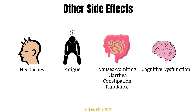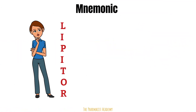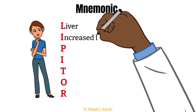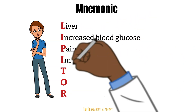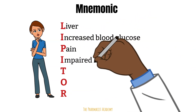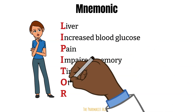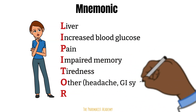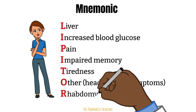A good way to remember some of these side effects is with the mnemonic LIPITOR — the brand name for atorvastatin. L is for liver, referring to the increase in transaminases. I is for increased blood glucose. P is for pain. The other I is for impaired memory. T is for tiredness or fatigue. O refers to other side effects like headache and GI symptoms. And R is for rhabdomyolysis.